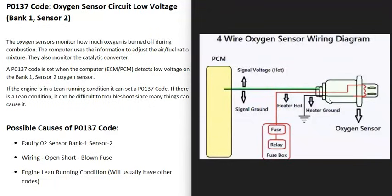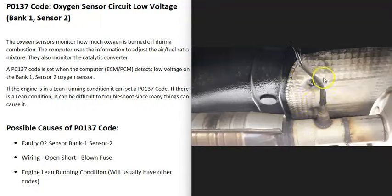There are usually two sides to these sensors: a heater element that makes it heat up quicker, and an oxygen sensor side that's detecting how much oxygen there is inside the exhaust. You'll have to get a schematic for your vehicle to know for sure what's going on.